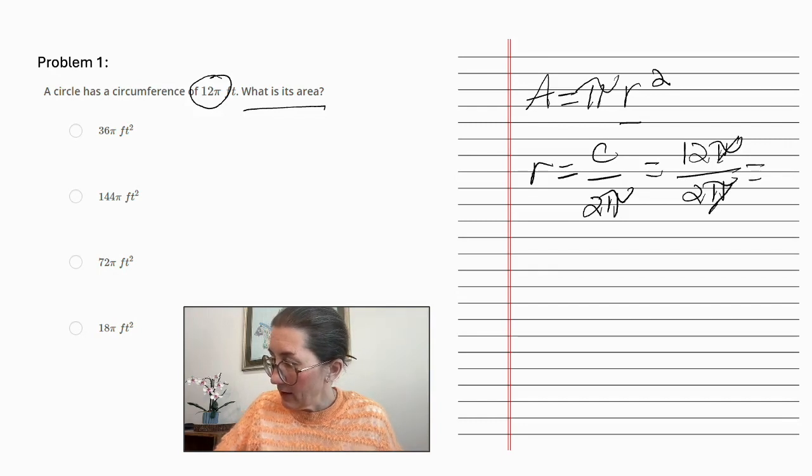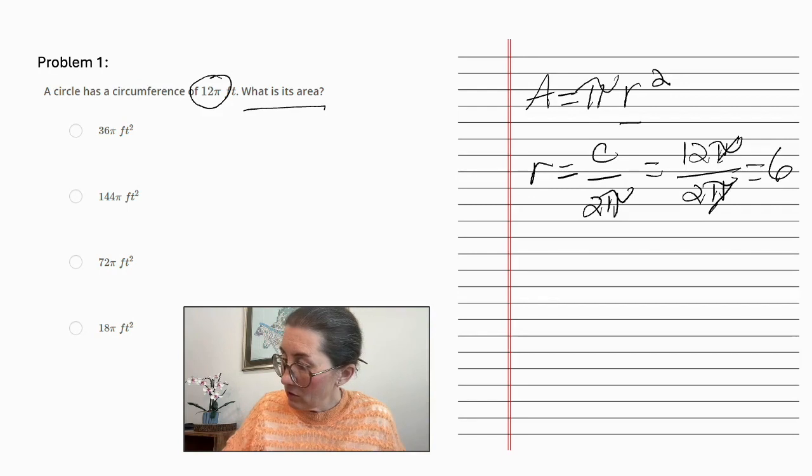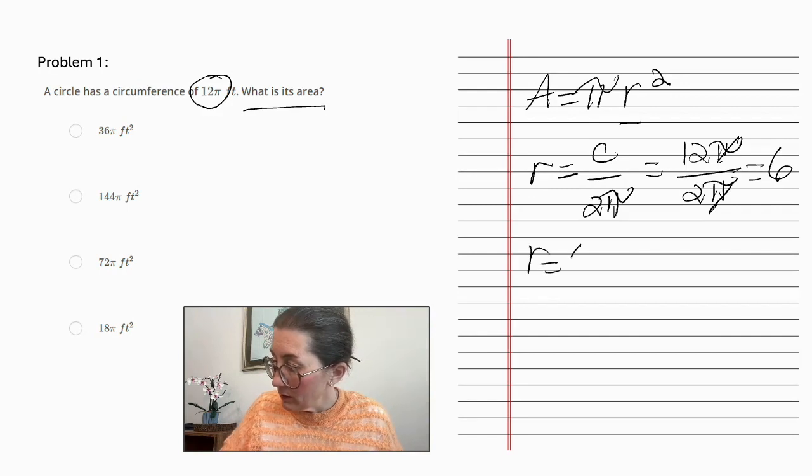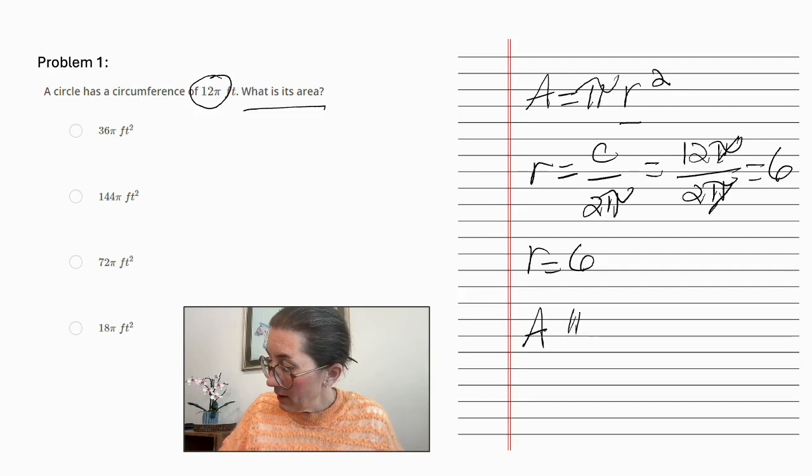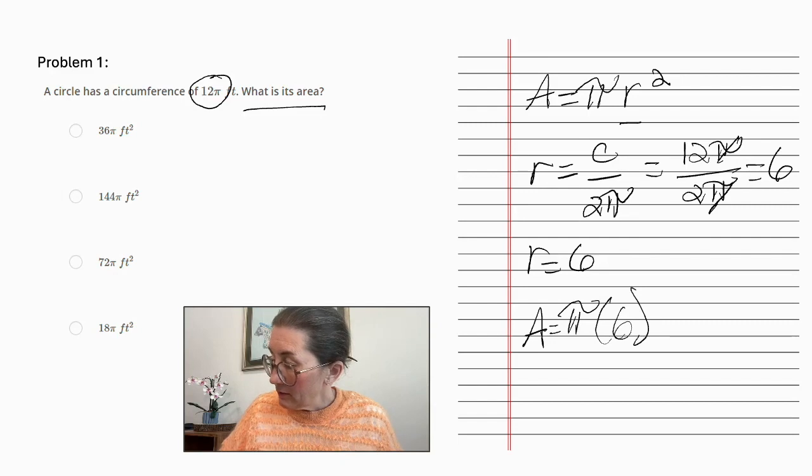So this is equal to 12π over 2π. We can cancel those out, and that is 6. So the radius is equal to 6. So the area is π times 6 squared, which is 36π.